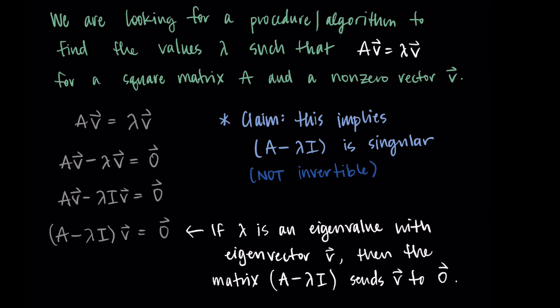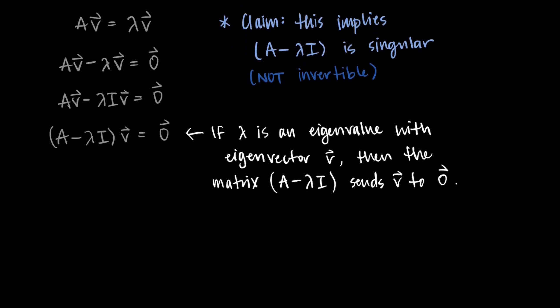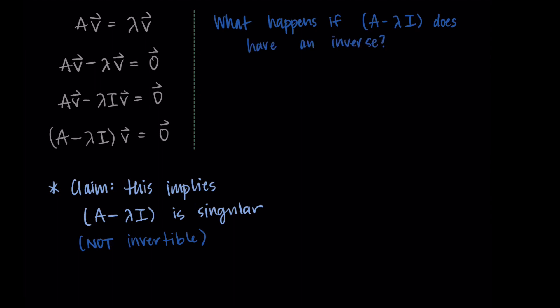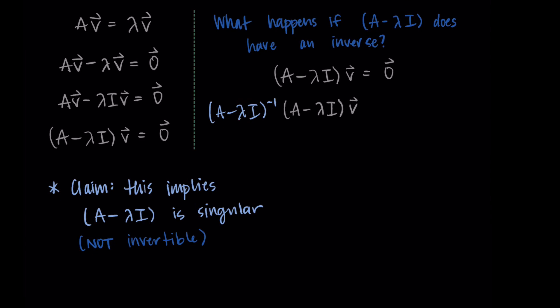I'm going to walk through the argument. Typically this relies on a conversation about vector spaces and more complicated things around matrix transformations. I'm giving a version that doesn't involve that and is a little more simplistic. I'm claiming A minus lambda I is singular. What would happen if it does have an inverse? If A minus lambda I times V equals the zero vector, and it has an inverse, we should be able to multiply by the inverse on both sides — multiply by A minus lambda I inverse on both sides.